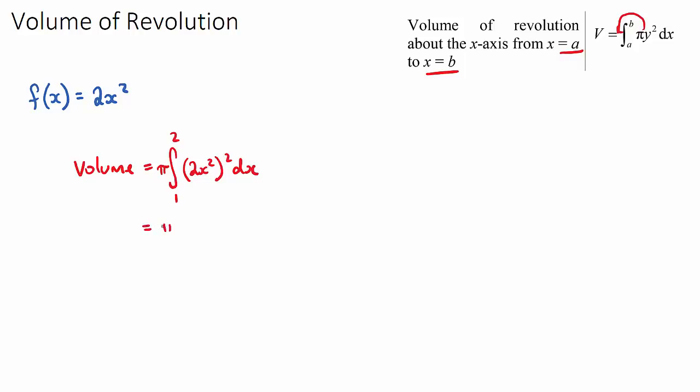So this will just be pi times the integral between 2 and 1 of, this will now, if we square our function, be 4x to the power of 4 dx. I power the 2 and our x squared. And then we just do a normal definite integral with a pi at the front. So we will have our integral which is 4x to the power of 5 over 5 with the limits of 2 and 1.